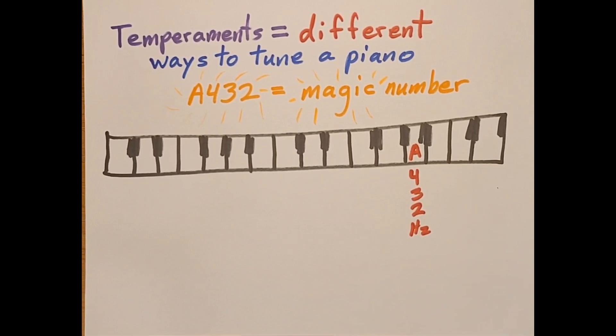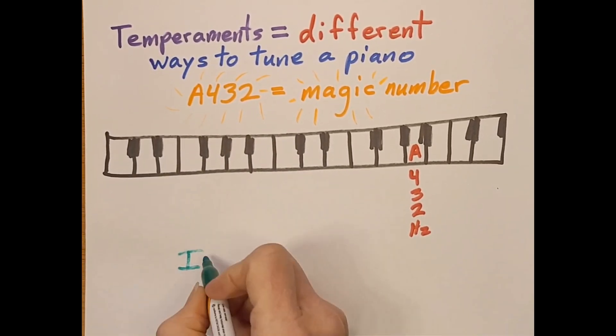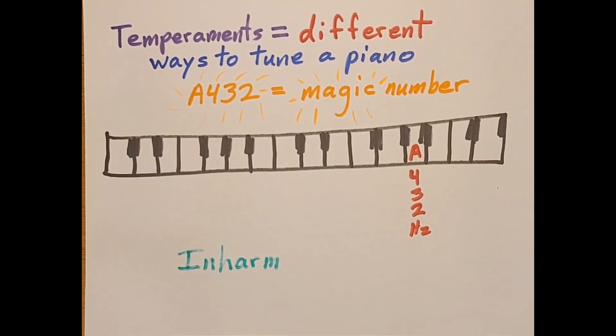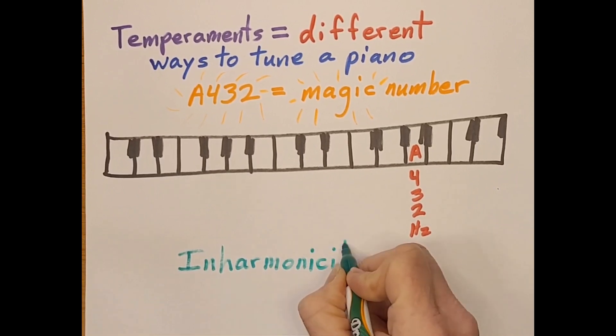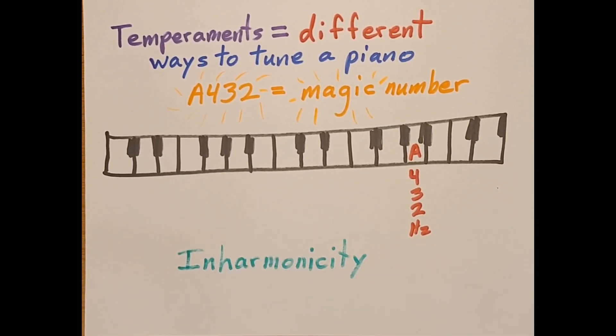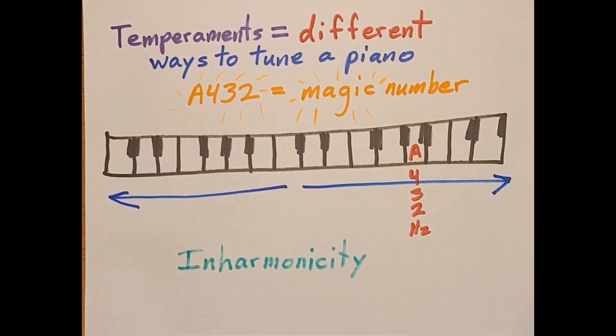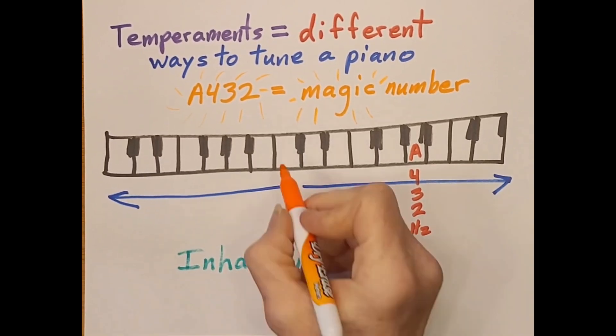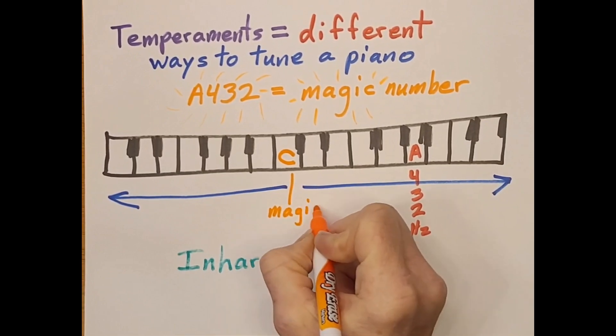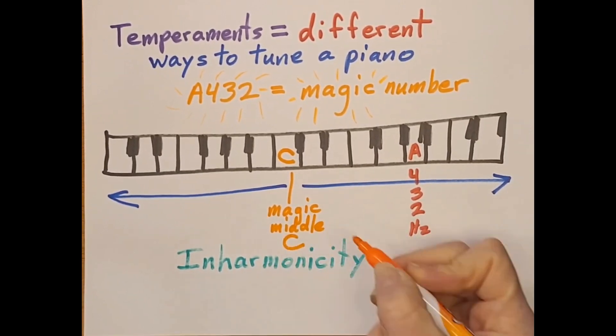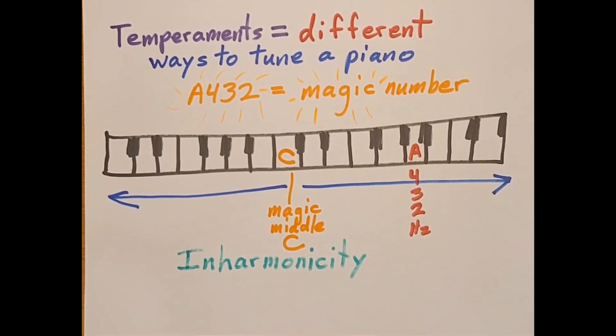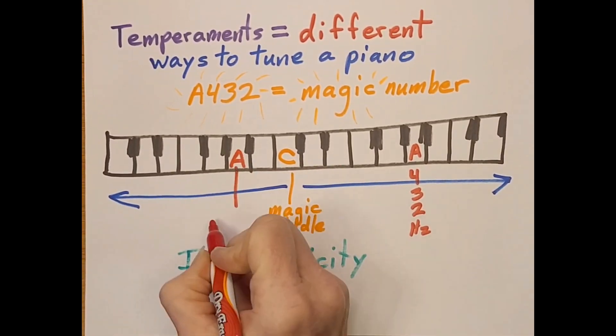On pianos, we have something called inharmonicity. Basically, because the harmonics from piano strings shoot sharp as they go up, the lower notes must be tuned lower so their harmonics line up with the upper notes, and upper notes must be tuned higher so their fundamentals line up with harmonics of the lower notes. I can share some links about that in my description, too.